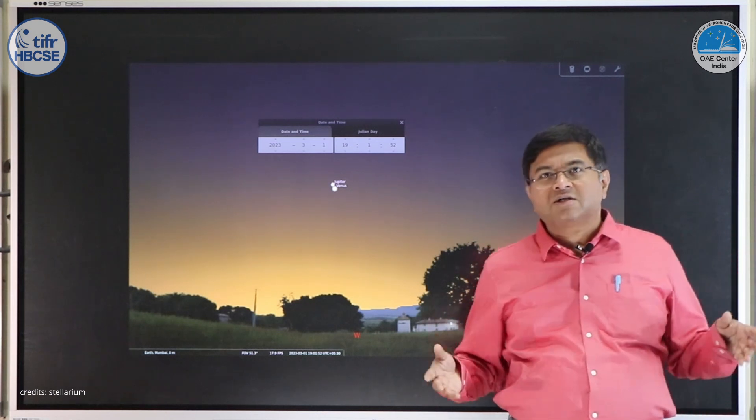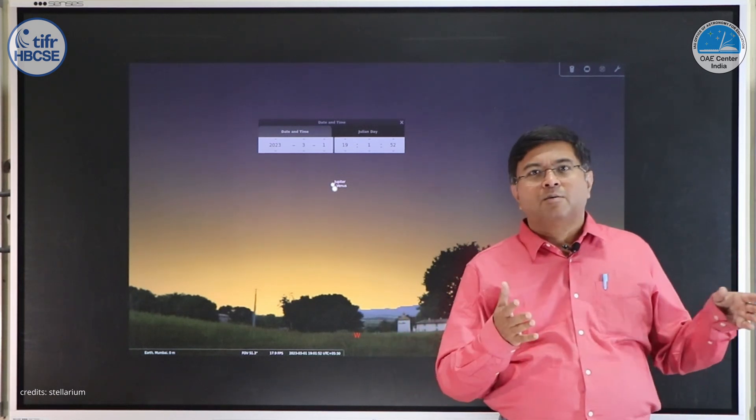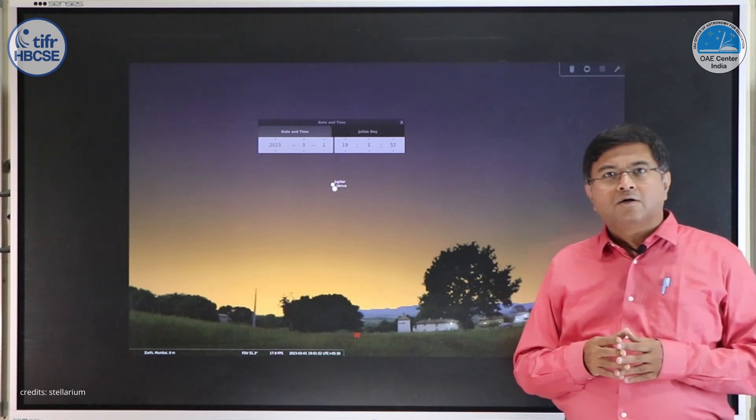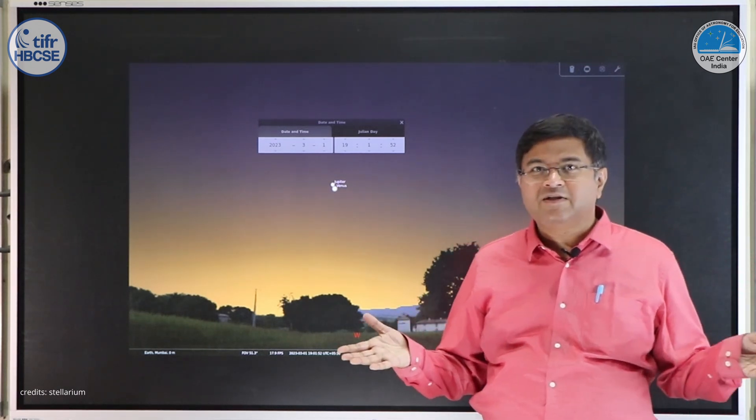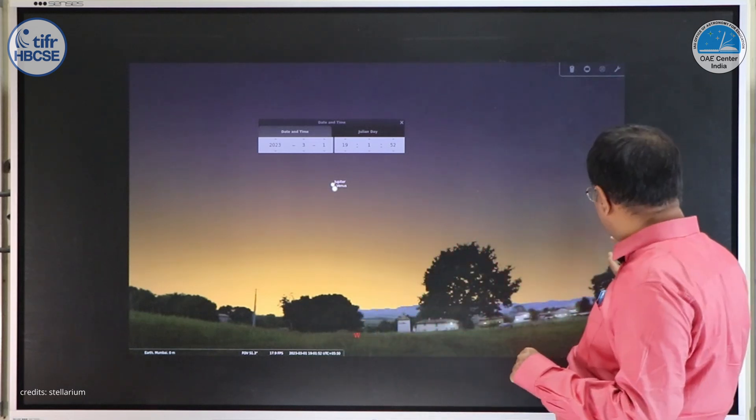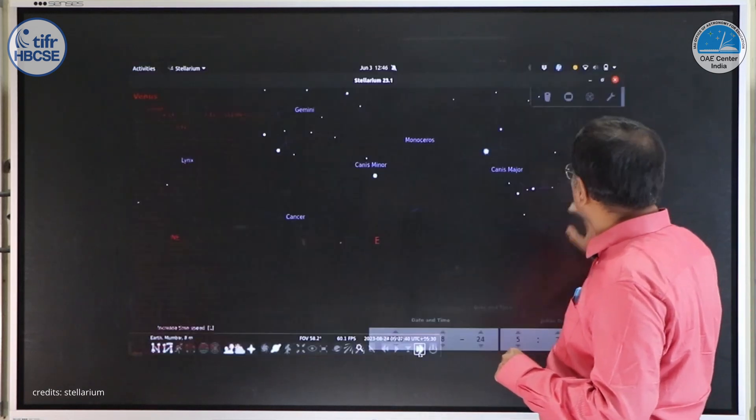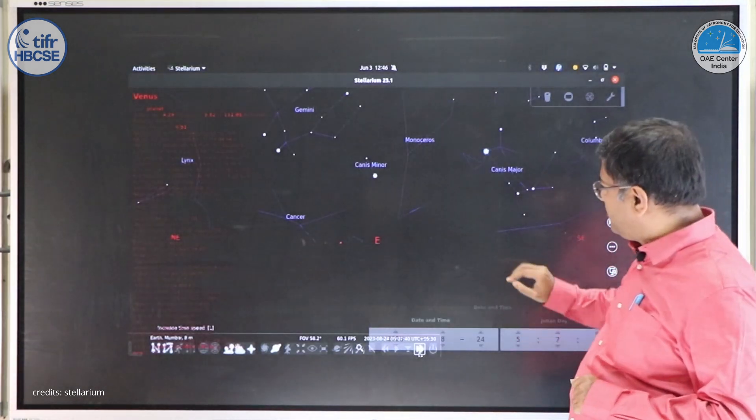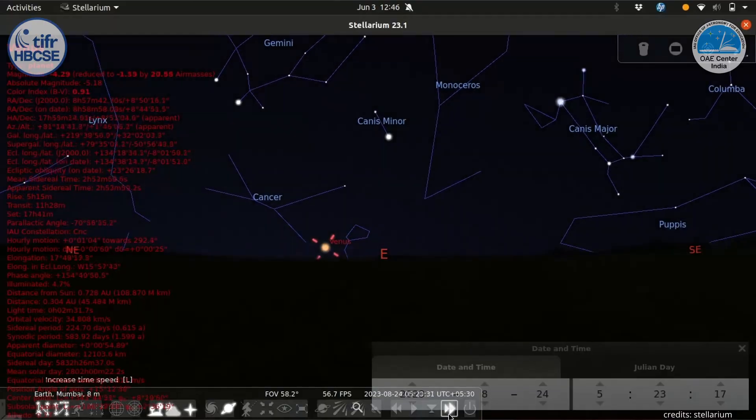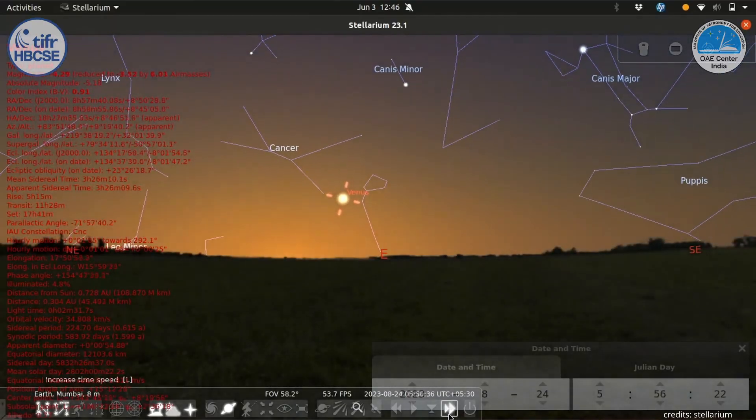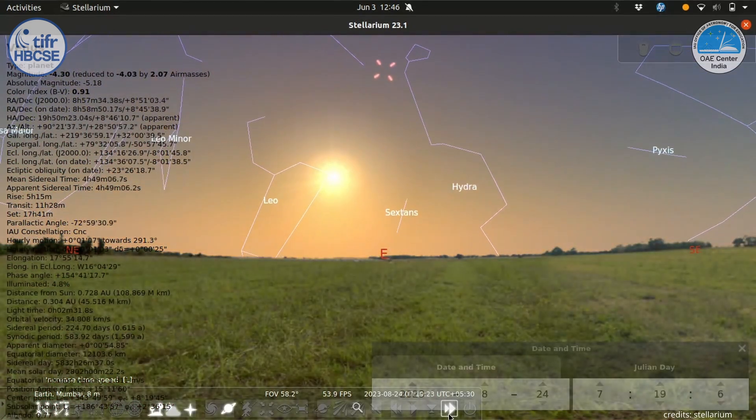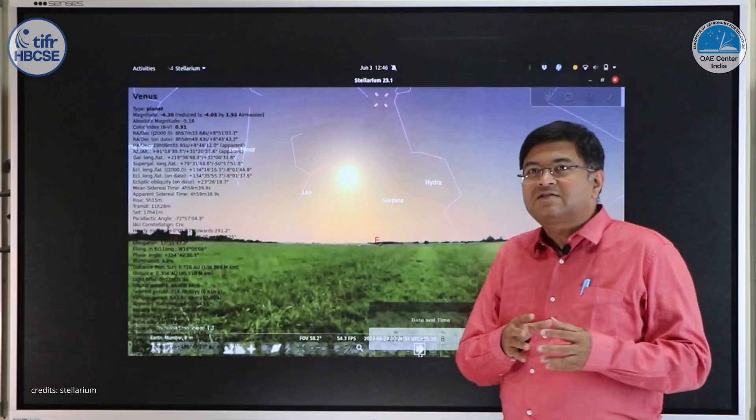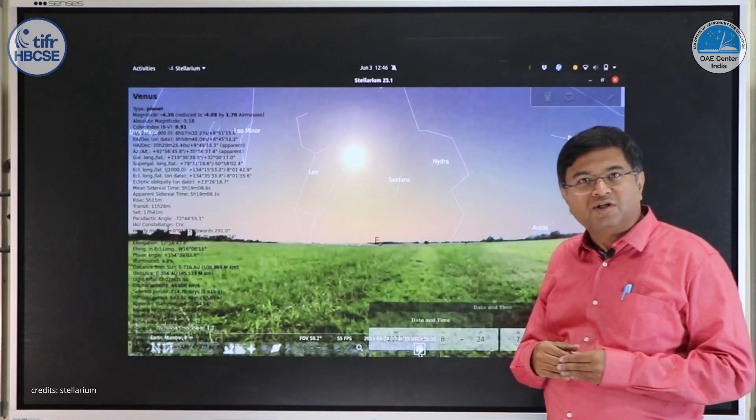In all cultures, Venus is known as morning star or evening star. Why does the same object Venus sometimes appear as morning star and sometimes as evening star? Let us look at the example here. We will see the sky moving. Venus is there in the sky just before sunrise and then sun rises. In this case, people will call it morning star.